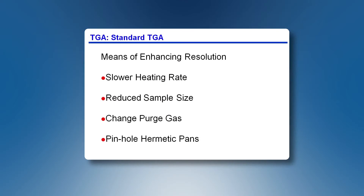In a standard TGA, in order to improve the resolution, typically we slow the heating rate, we reduce the sample size, we change the purge gas, or even we use hermetic pinhole pans. The most common approach is to slow the heating rate. The problem with that is that our experimental time will increase too much.